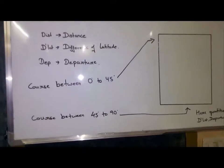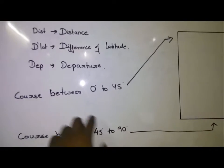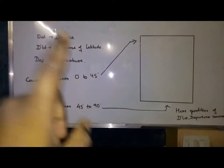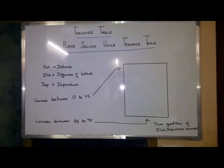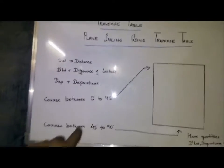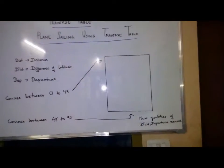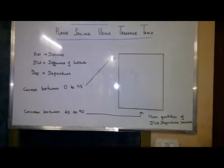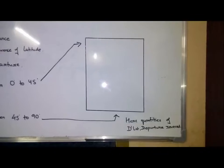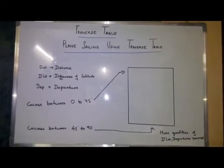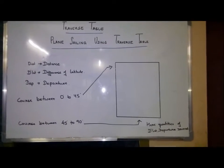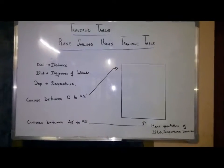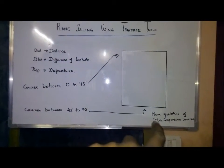If your courses is between 0 degrees to 45 degrees in plane sailing, you have to use the values from the top of the table. If it is more than 45 degrees, when your courses are between 45 to 90 degrees, you have to use the values from the bottom. There is a major difference here. The quantities of DLAT and departure are reversed. If the heading is provided in the bottom, you have to just follow it. You cannot just go and use the values which are on the top. First thing that you have to check is the course. If your course is between 0 degrees to 45 degrees, use the values from the top of the page. If it is from 45 to 90, use it from the bottom.